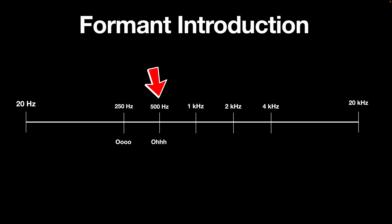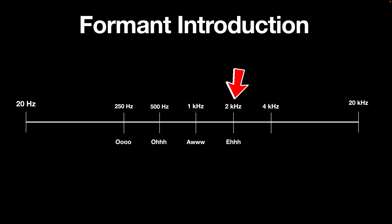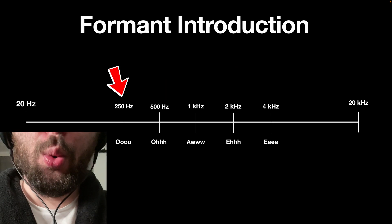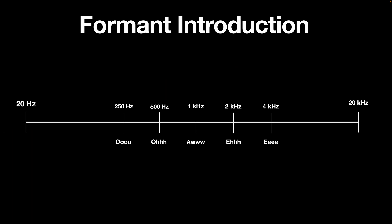It's the OOO frequency. At 1000 hertz, we find the AH as in daughter. Next, at 2000 hertz, we get the E as in bet. Moving higher, 4 kilohertz gives us the E as in beat. These are the main five formants that I was first introduced to, and if you've taken any vocal lessons, these are drilled right into your jaw and soft palate.